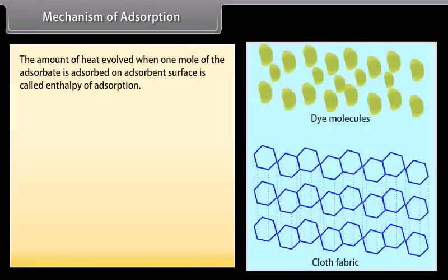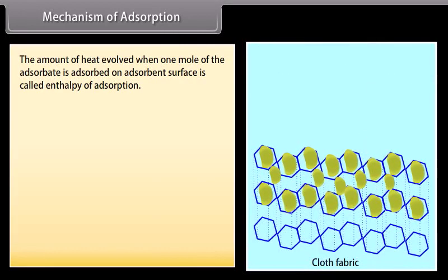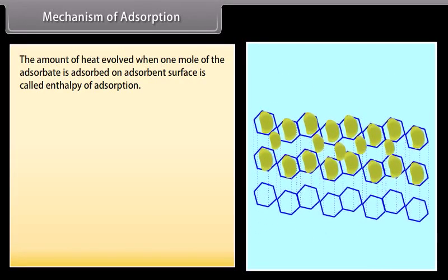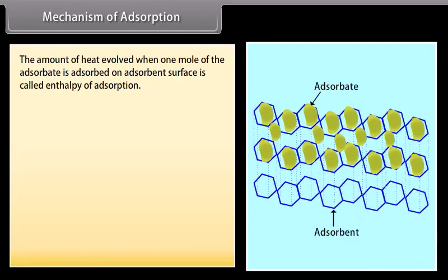The desorption process involves removing an adsorbed substance from a surface. Regarding the mechanism of adsorption: the amount of heat evolved when one mole of the adsorbate is adsorbed on the adsorbent surface is called enthalpy of adsorption.